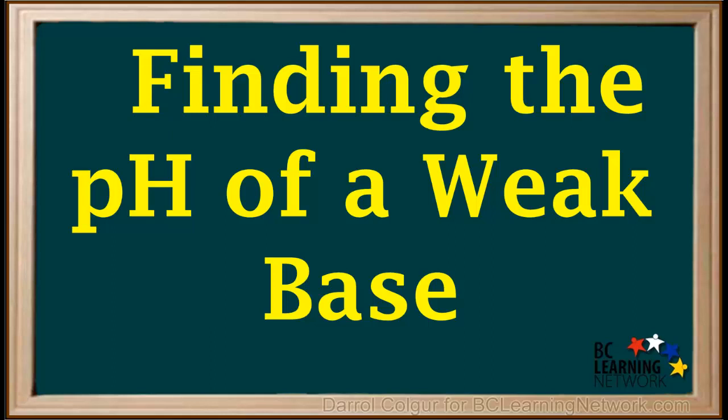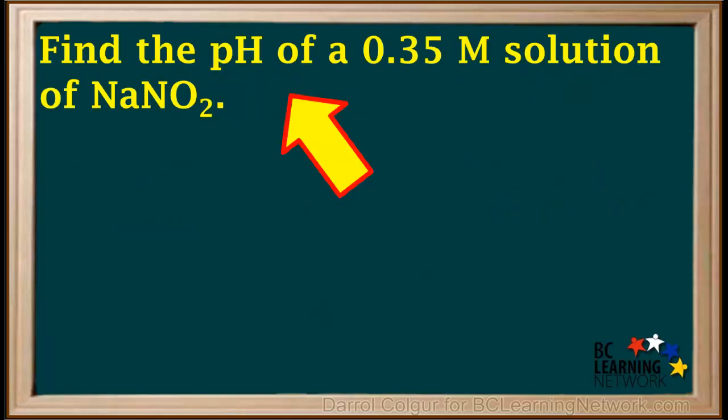Here, we'll go through the steps necessary to find the pH of a weak base with a given concentration. We're asked to find the pH of a 0.35 molar solution of the salt sodium nitrite, NaNO2.